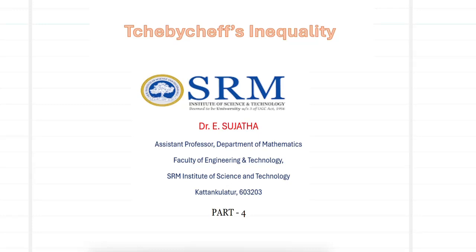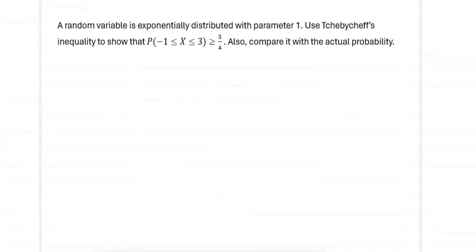Hello friends, welcome to this video on Chebyshev's inequality part 4. We have been applying Chebyshev's inequality to find the lower bound or the upper bound of any given problem whose actual probability function is not known. The problem is: a random variable is exponentially distributed with parameter 1. We have to use Chebyshev's inequality to show that the probability of minus 1 less than x less than 3 is greater than or equal to 3 by 4. The question comprises two parts: finding the approximate value using Chebyshev's, and finding the actuals using the given distribution.